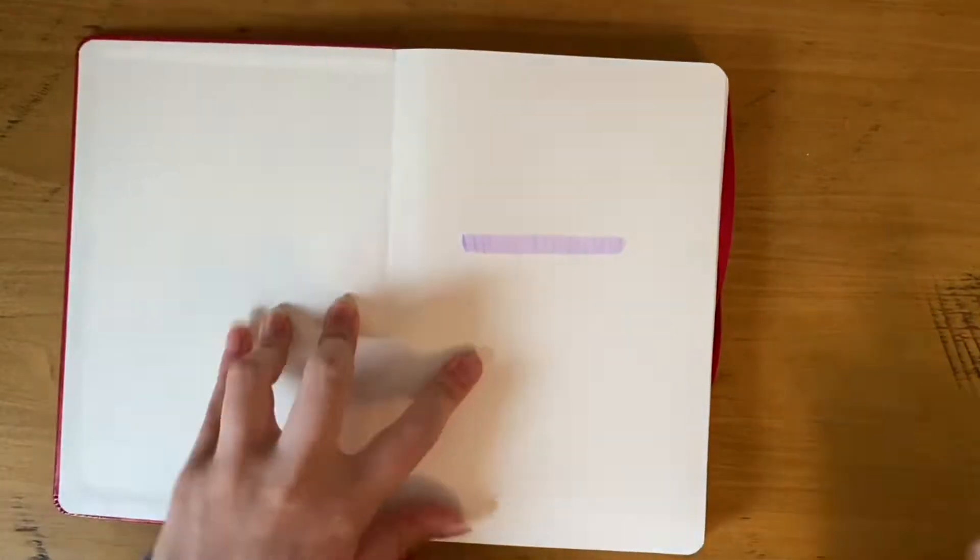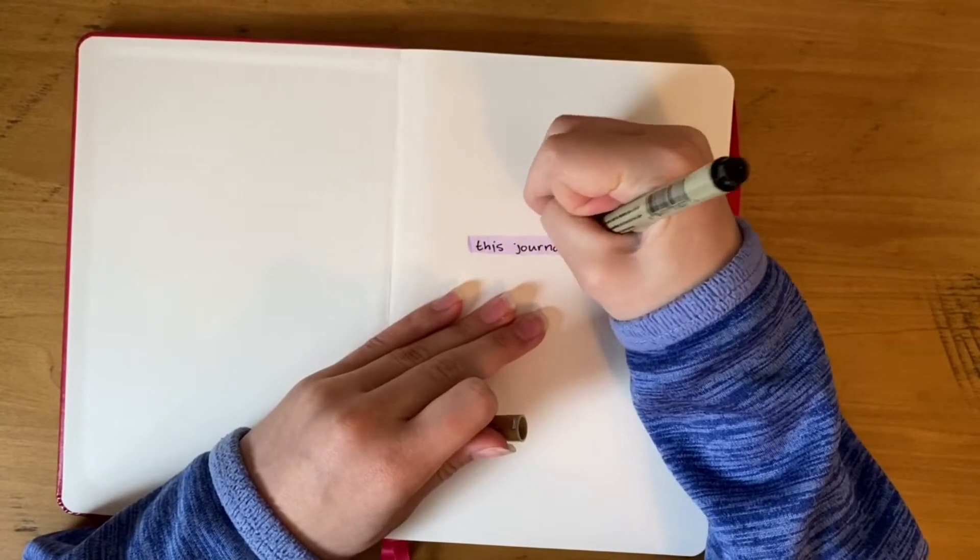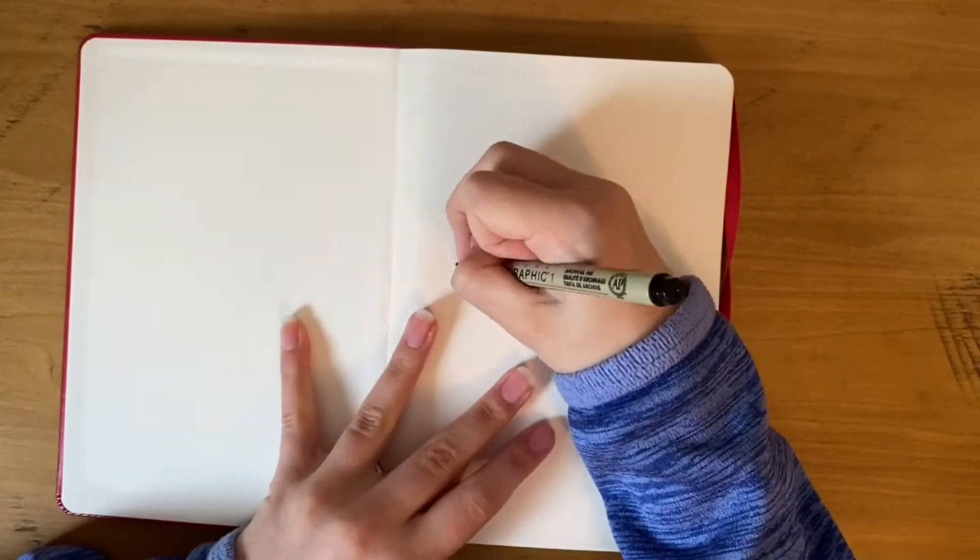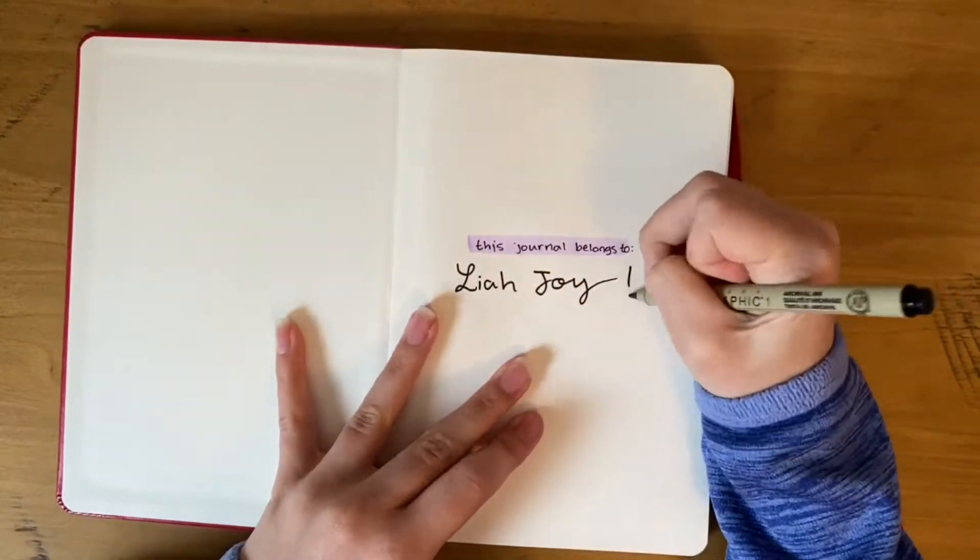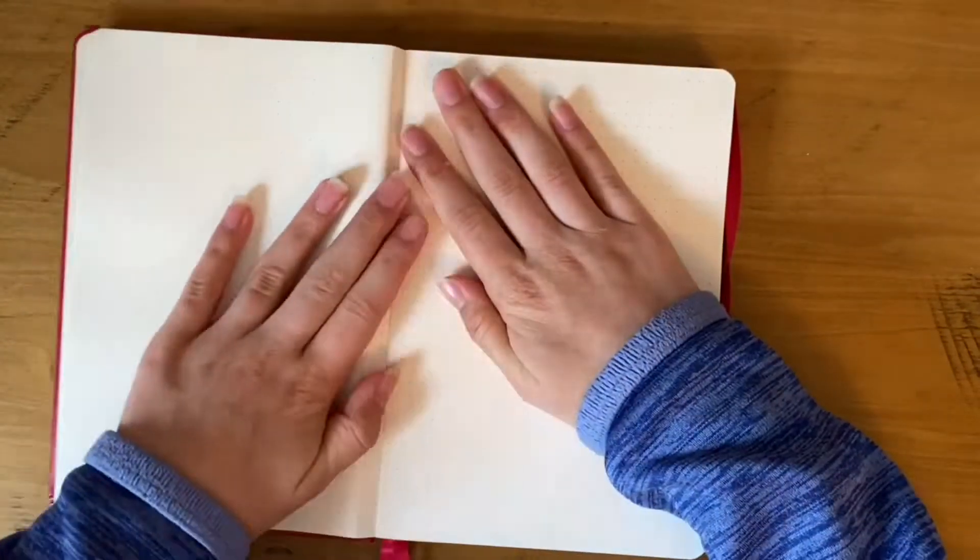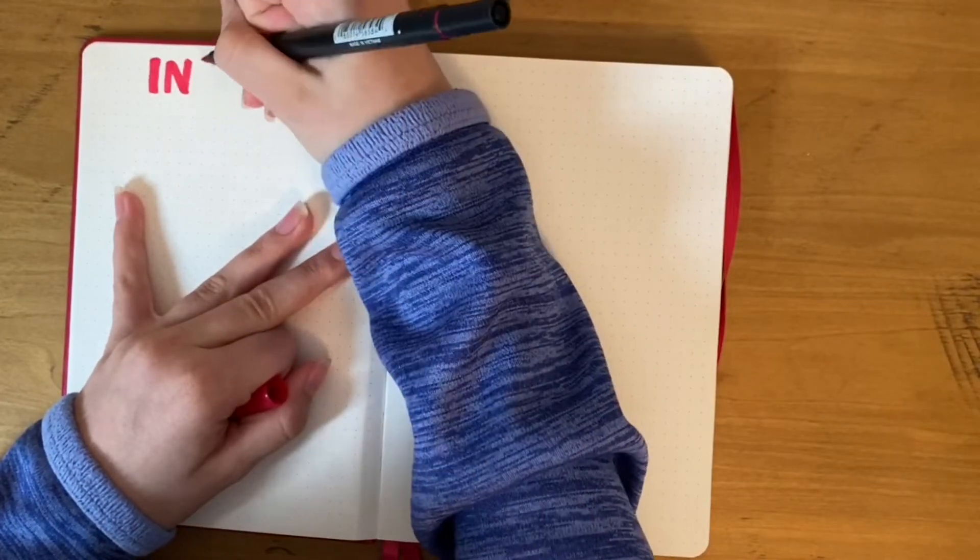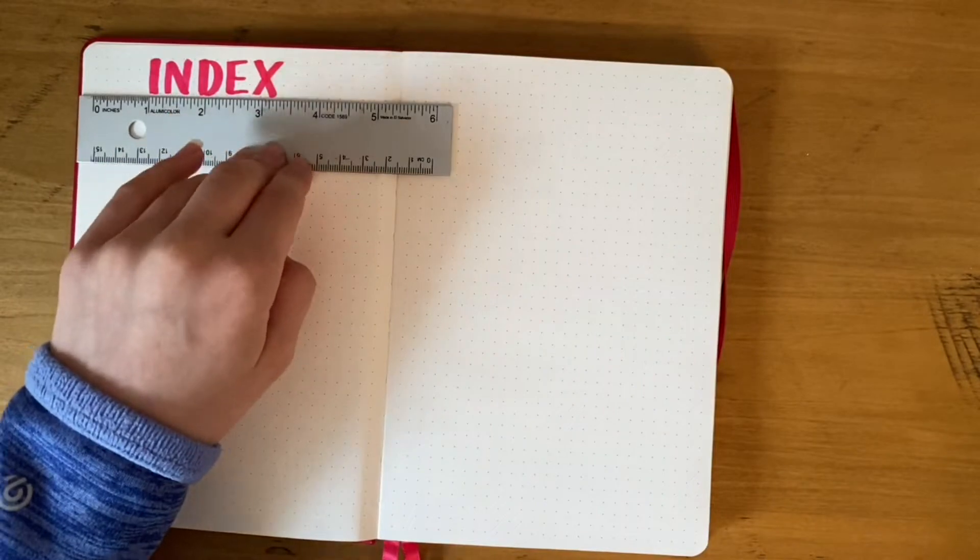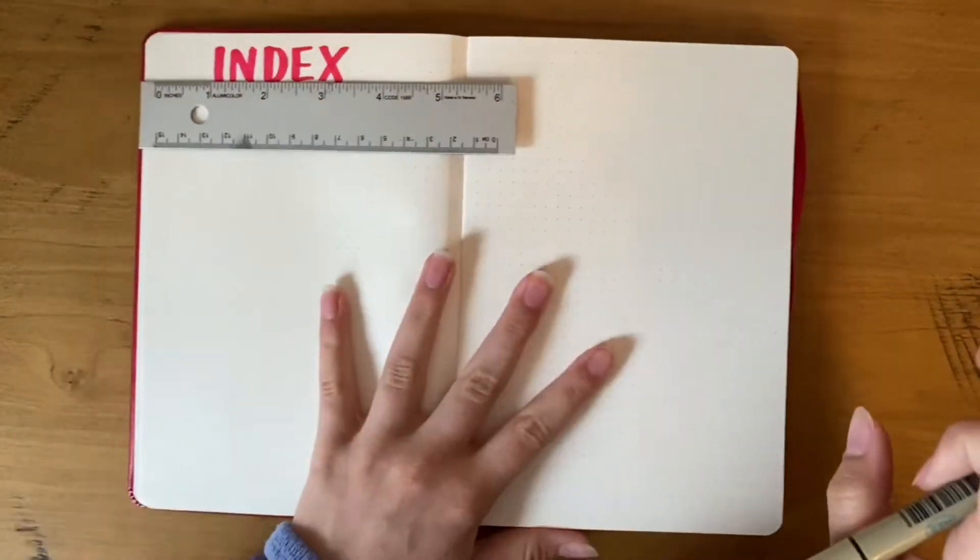Getting straight into this, I wanted to kick it off with 'this journal belongs to' on the front page. I just put my name down there. This journal didn't come with an index, so I skipped the first page because I knew I only needed a double spread of an index, and then just wrote 'index.'